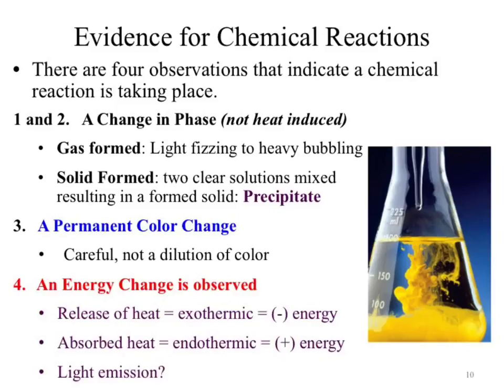What else happened? We have a color change. We started with two clear solutions — we can see from the dropper that both are clear. We're taking two clear solutions and mixing them. We see a solid form immediately — chemical change. Not only do we have a chemical change because of the solid forming, we also see a color change: two clear solutions mixing to form a new color. That's a chemical change. You have to be careful that it's not just a dilution of color.